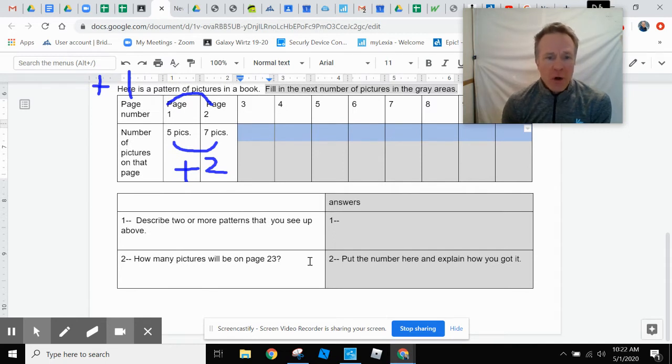Let's take a look at the work down below. Describe two or more patterns that you see up above. Oh, we just did that. The pages go up by one and the pictures go up by two. Another way to say that is count by two, count by one. So there you go for that one.